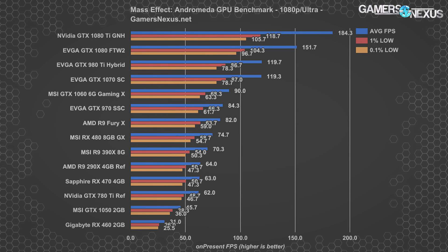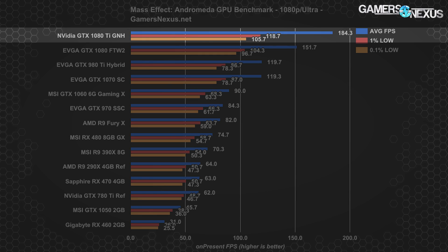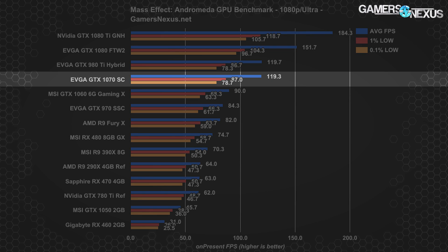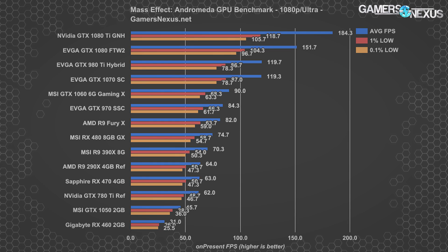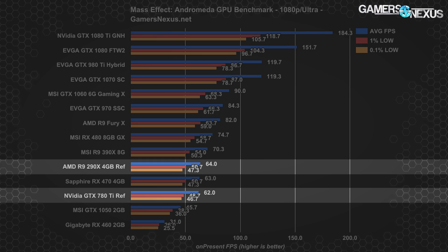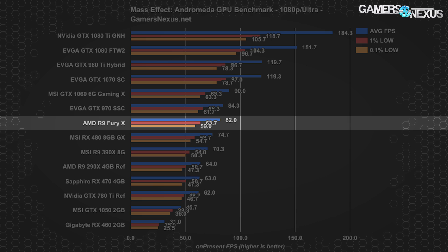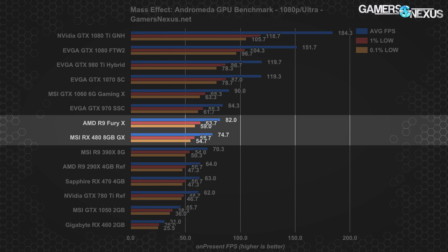Moving to the most widespread resolution, 1080p posts the 1080 Ti nearing 200 FPS average, the 980 Ti at around 120 average, and the 1070 tied with the 980 Ti. Everything here, even the worst performing devices, has tightly timed frame pacing, making for a generally smooth experience if above roughly 50 FPS average. The GTX 780 Ti and R9 290X do a lot better here thanks to lowered pixel throughput, with the 290X landing a few frames ahead of the GTX 780 Ti. NVIDIA holds the top half of the chart, with the best performing AMD card being the Fury X at 82 FPS average, trailed about 8% by the RX 480 Gaming X, and then closely followed by the R9 390X.